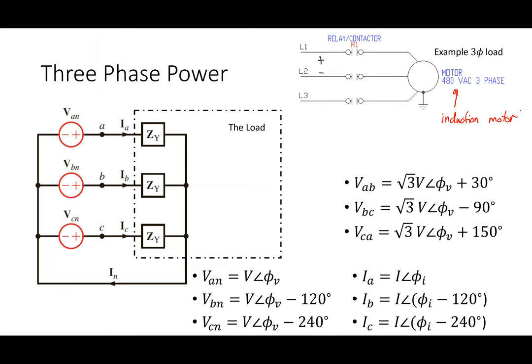These are the relationships between Van, Vbn, and Vcn. If this guy has an angle φ, then these are all related to it. The important thing is: what's the phase shift between the voltage and current on a phase? What's the phase shift between Van and Ia? It's the impedance angle. Same for Vbn and Ib, Vcn and Ic — it's the impedance angle for all of those.